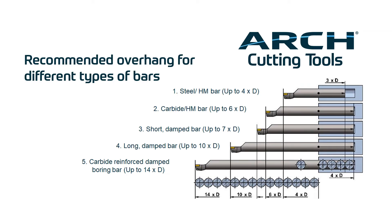Every boring bar application is uniquely different. To make it easy to choose, we can refer to the recommended type of bar based on the maximum overhang to aid in proper selection of the boring bar material type. As shown here, it is highly recommended to start considering a carbide or heavy metal bar as you surpass four to five times the bar diameter overhang. Internally damped bars have a significant impact on optimizing speed and feed capabilities and reduce vibration tendencies, making them a strong productivity booster.